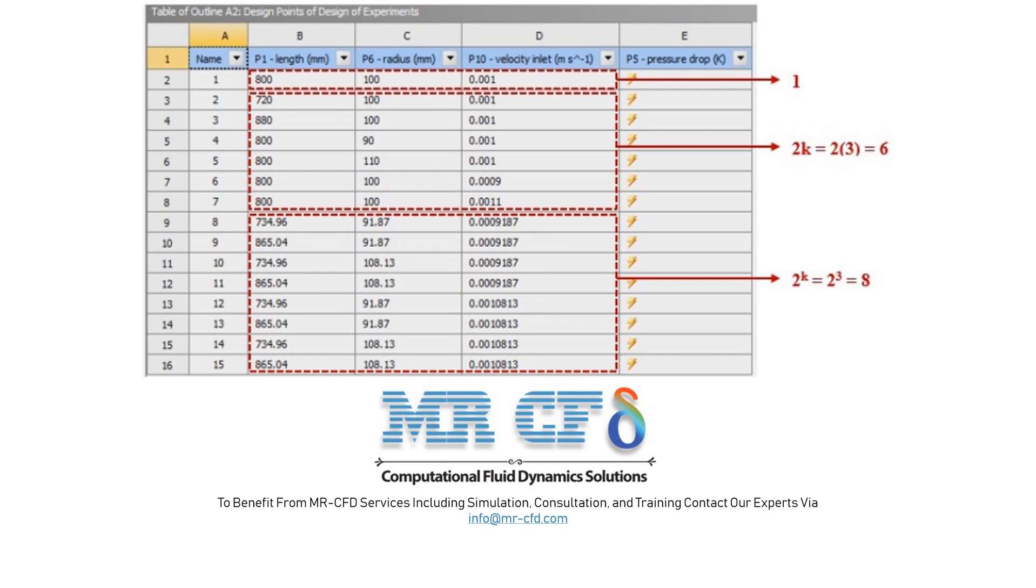As shown in this figure, the range of defining changes for the geometric parameter of length from 720 millimeter to 880 millimeter, the range of changes in the radius geometric parameter from 90 millimeter to 110 millimeter, and the range of changes in the operating parameters of input flow velocity is from 0.0009 meter per second to 0.0011 meter per second.